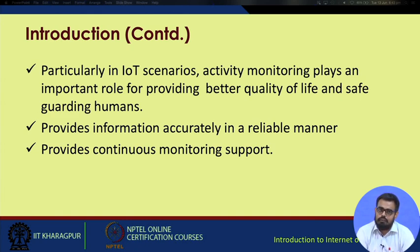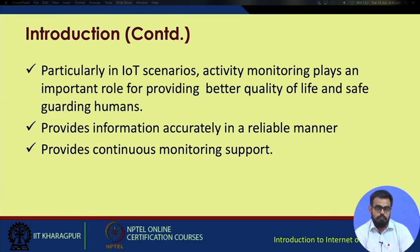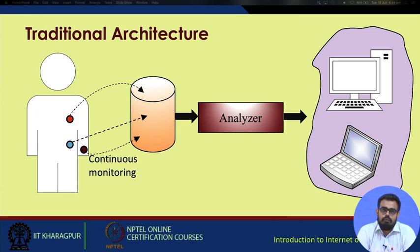There are high chances that the person may survive. Another important aspect is to provide information accurately and in a reliable manner, with continuous monitoring support. In typical architectures, a person is equipped with multiple wearables — one tracking heartbeat, one tracking body temperature, one tracking activity on the wrist — and all this data is forwarded to a remote router or network server.